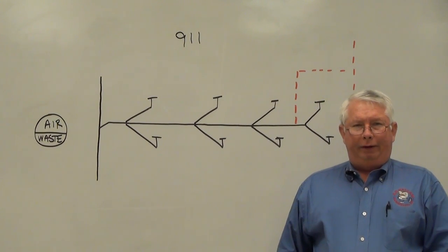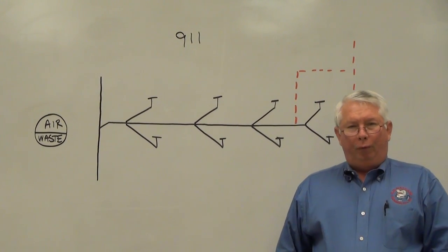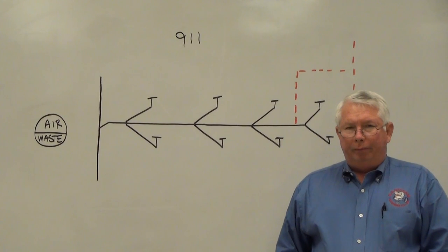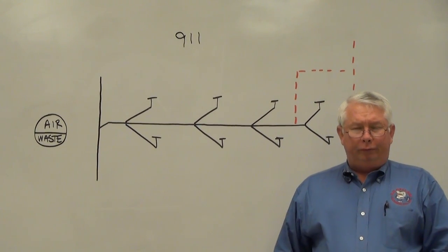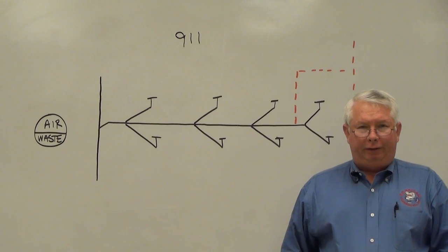Circuit venting is for venting a battery of up to eight fixtures on one horizontal branch drain. Multiple circuit vented horizontal branch drains can be connected together.